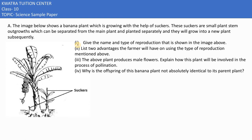The image below shows a banana plant which is growing with the help of suckers. These suckers are small plant stem outgrowths which can be separated from the main plant and planted separately, and they will grow into a new plant.